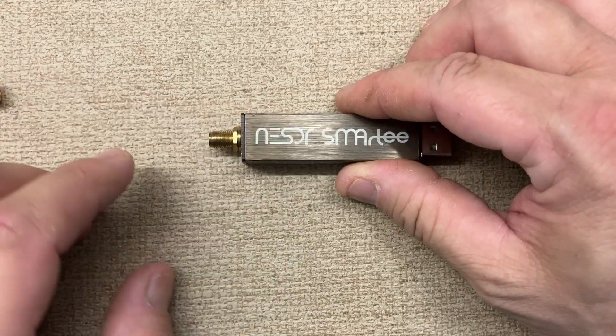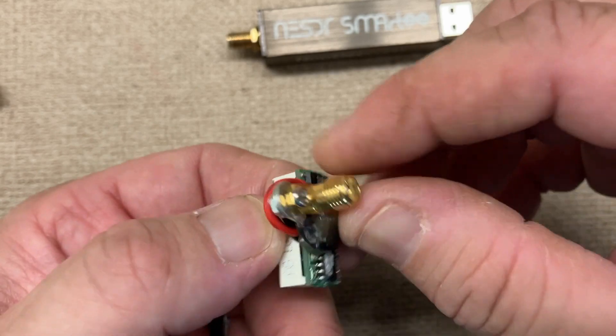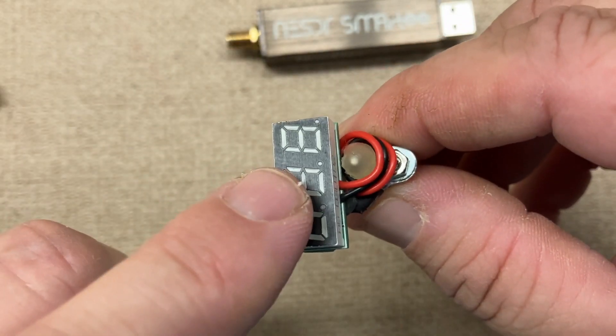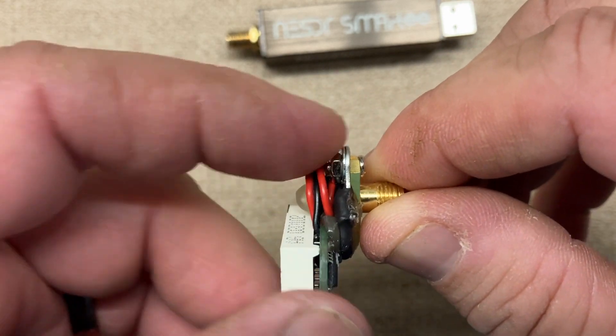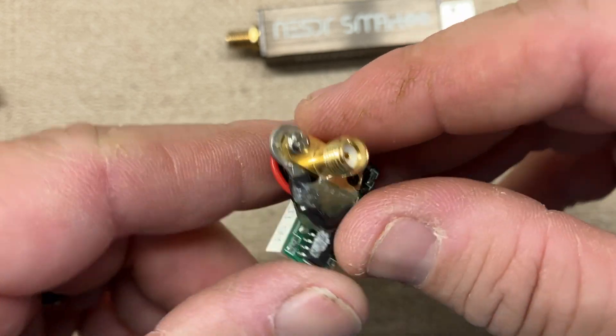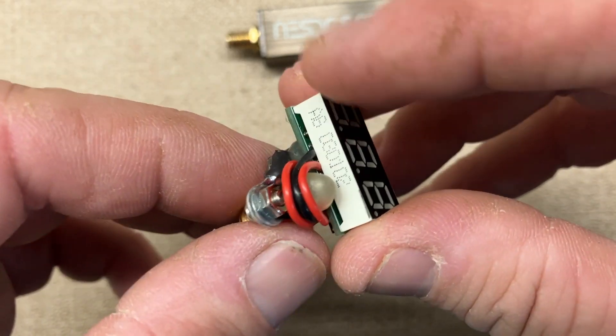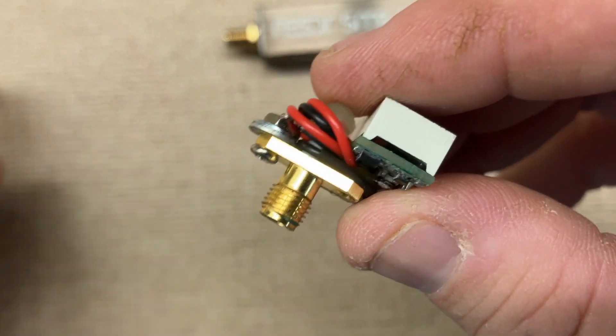I always kind of thought about this and never did it, so I went ahead and took an SMA bulkhead type connector and a little display here that tells you the voltage. I just hooked the black lead to the shield of the connector and soldered the red lead to the center pin of the SMA connector.